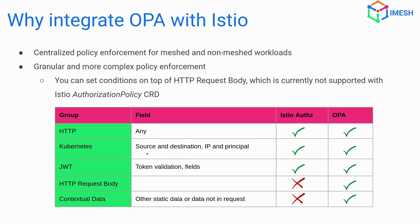Istio authorization can also handle source and destination principals. But once you move into the HTTP request body or want to use other contextual data, Istio authorization will not help you — it is not supported. On top of that, if you have a very complex set of rules, writing them with Istio authorization policies is quite tedious. Open Policy Agent, being closer to a programming language, lets you configure it in a much simpler way.